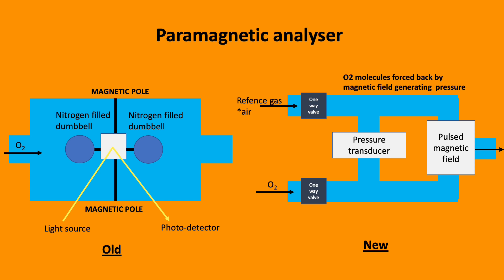Modern paramagnetic analyzers contain a sample and reference tube. Oxygen is attracted to the magnet which cycles on and off, and this pressure is detected by a pressure transducer. The higher the oxygen, the greater the attraction and the lower the pressure.